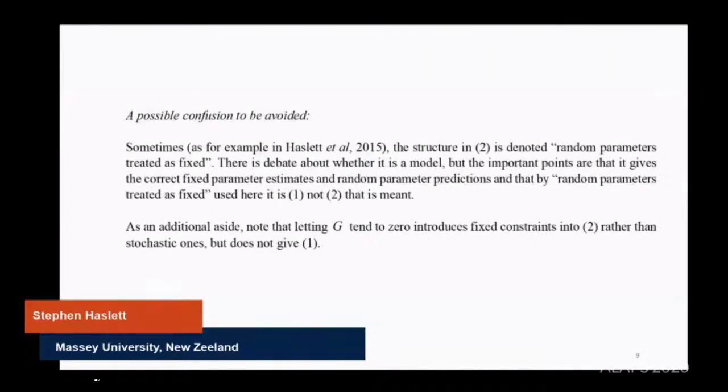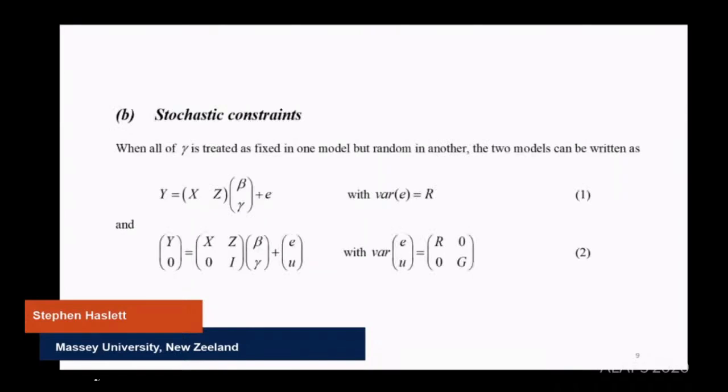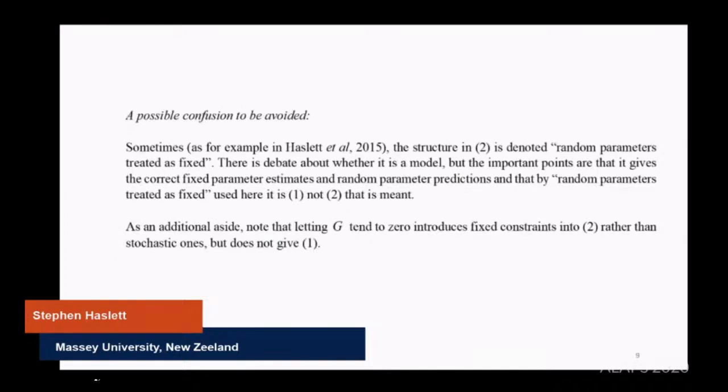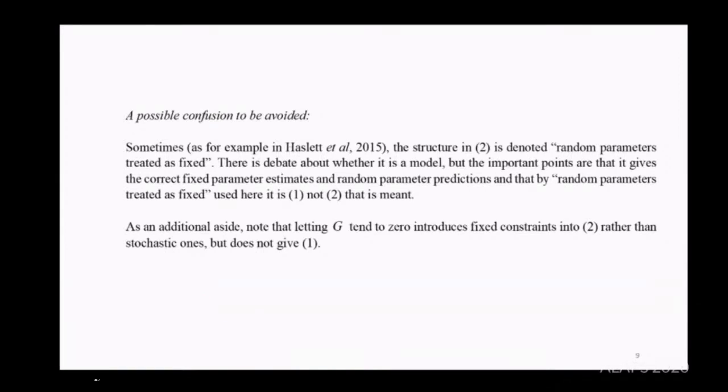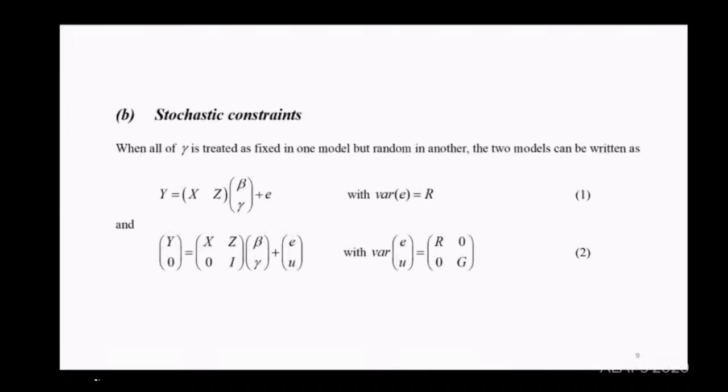There's a possible confusion I want to cover briefly. The structure in model two, that random mixed effects model, is denoted as random parameters as fixed, but there's debate about whether it's a model. Sometimes when people use random parameters treated as fixed, they're referring to the second equation and treating gamma as fixed despite it making no sense, but computationally it works perfectly. My point is if you treat it as random, you can carry through with the algebra and calculus and still get the right answer. Just note that if we let G tend to zero in this model, we don't actually get the first model.